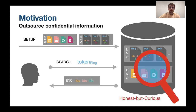For security we use an honest-but-curious adversary model: the server will try to learn as much information as possible about our data, but we can assume he adheres to all protocols honestly. In general SSE is very efficient — we only use symmetric primitives, usually hash functions, PRFs, or symmetric encryption — so the cryptographic overhead is actually fairly low.